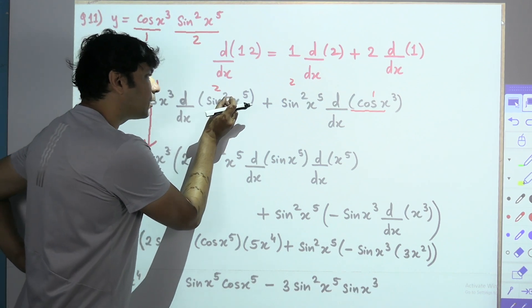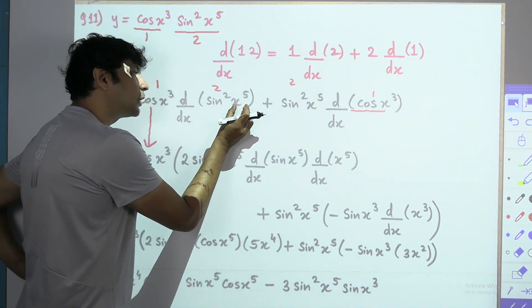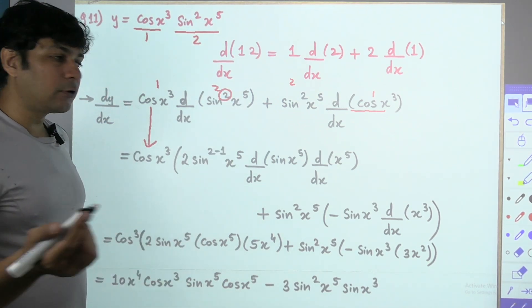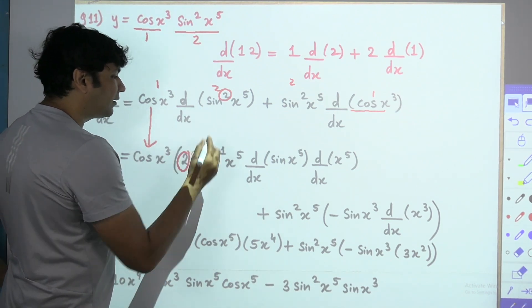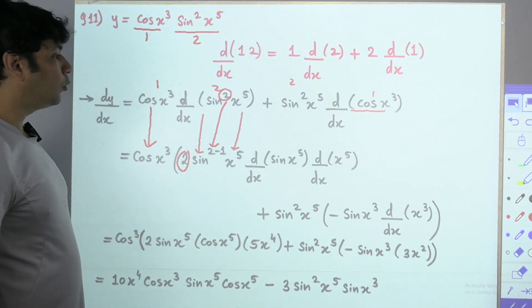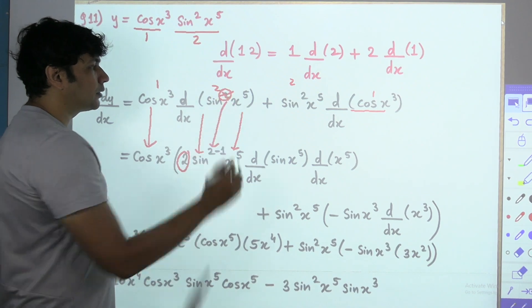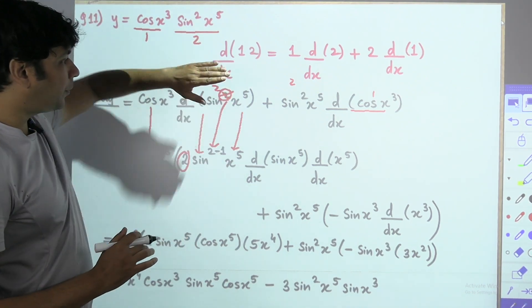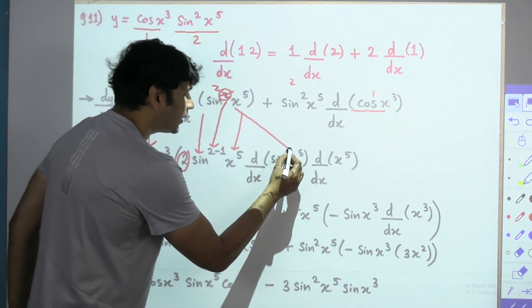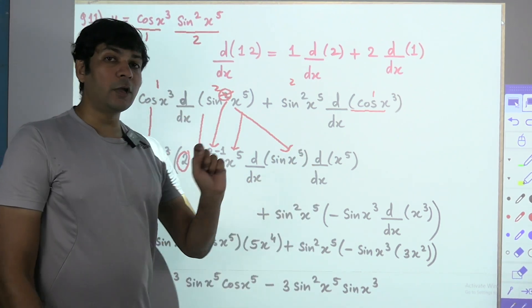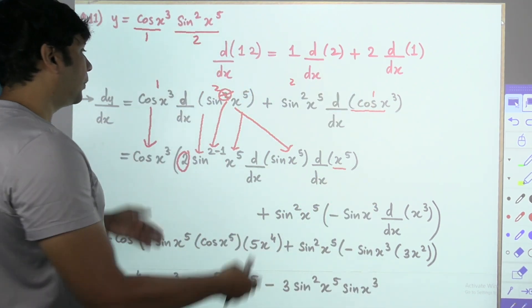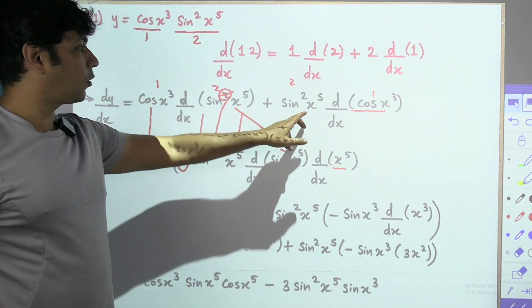For sin²(x⁵): a number between trigonometry and its constant activates x^n concept. Write power first: 2·sin^(2−1)(x⁵) = 2·sin(x⁵). Then differentiate sin(x⁵) separately — chain rule again, into differentiation of x⁵. Anything apart from x activates chain rule. So we must go deeper into differentiation of x⁵.